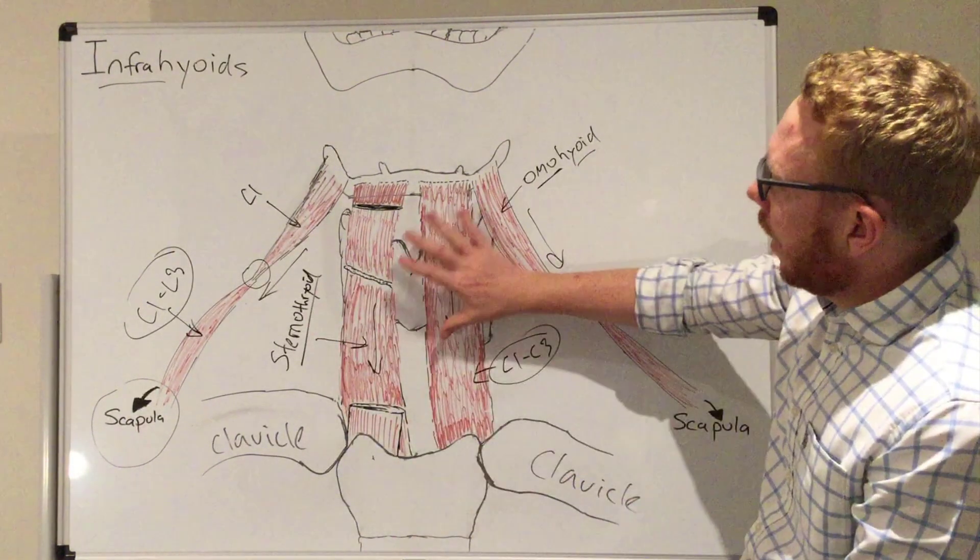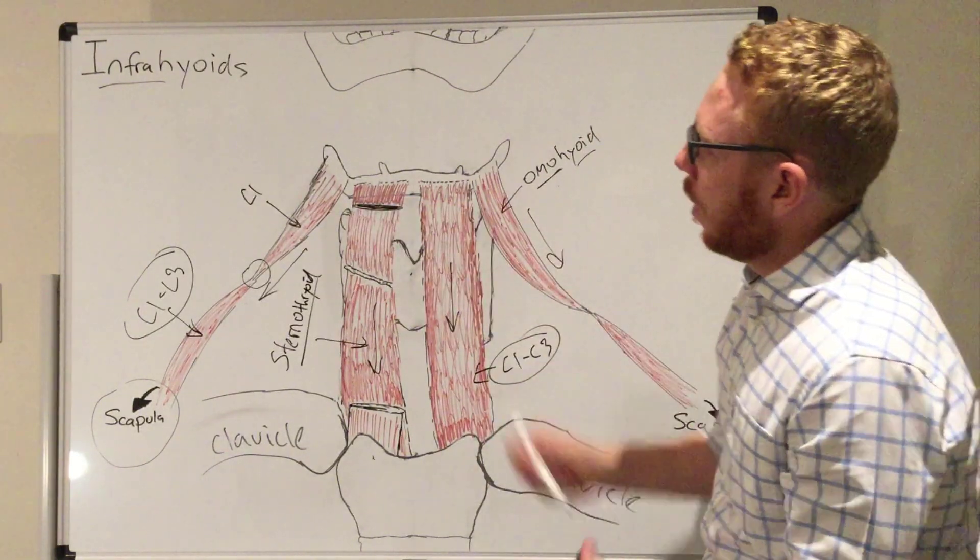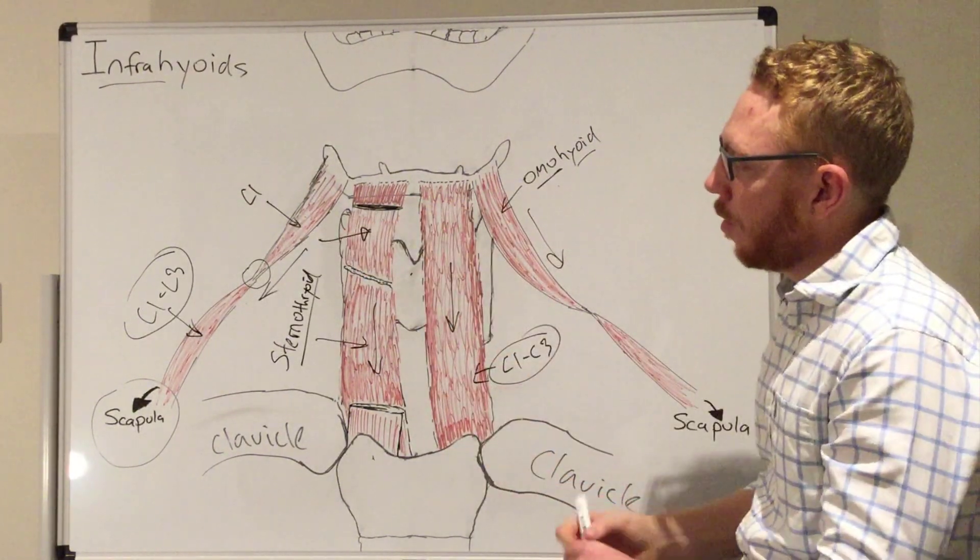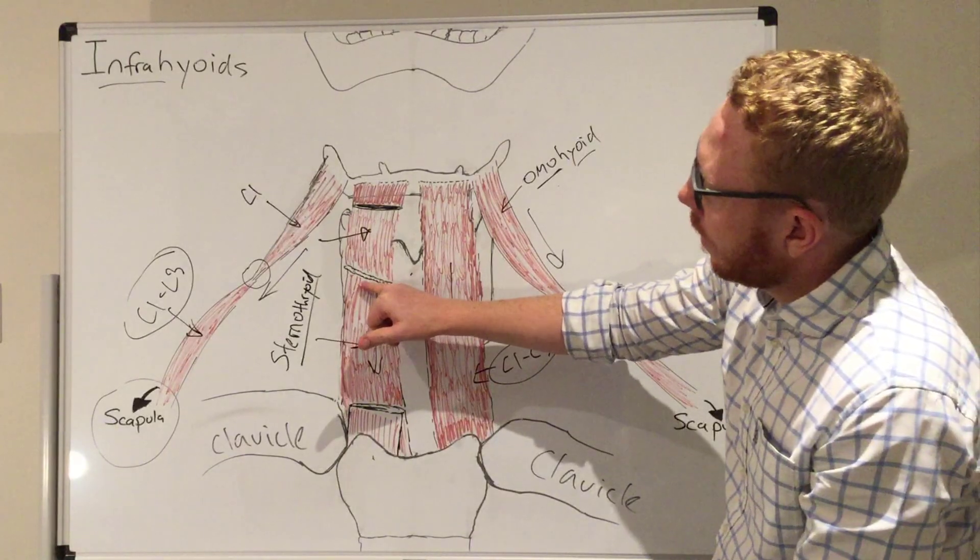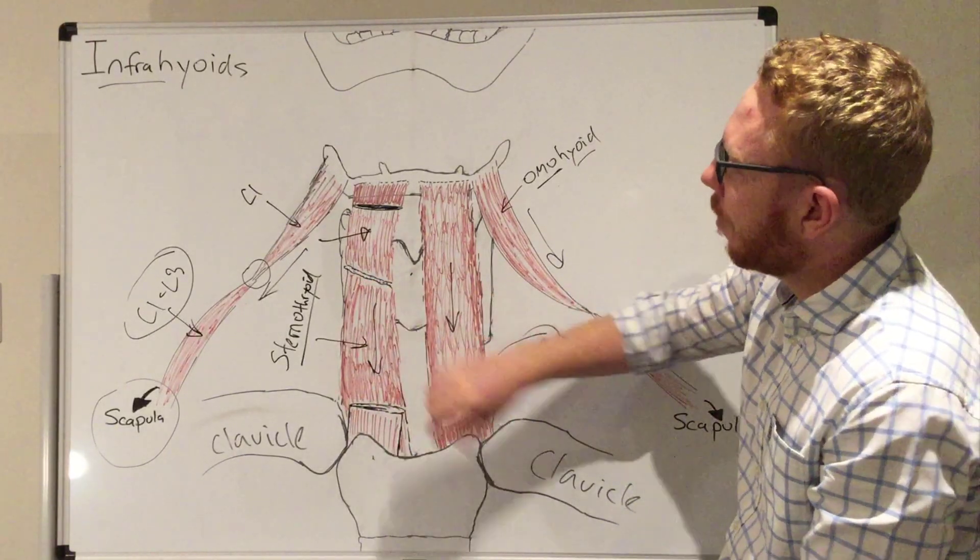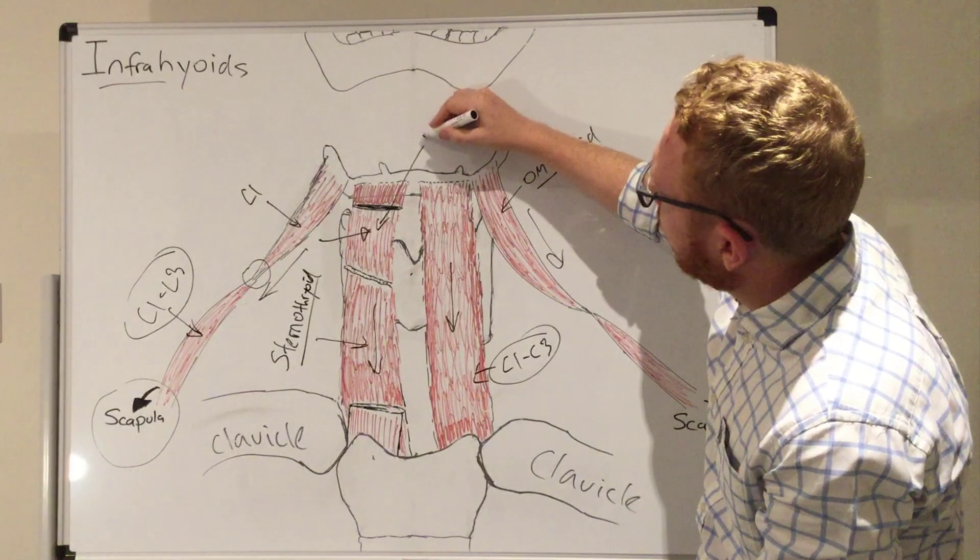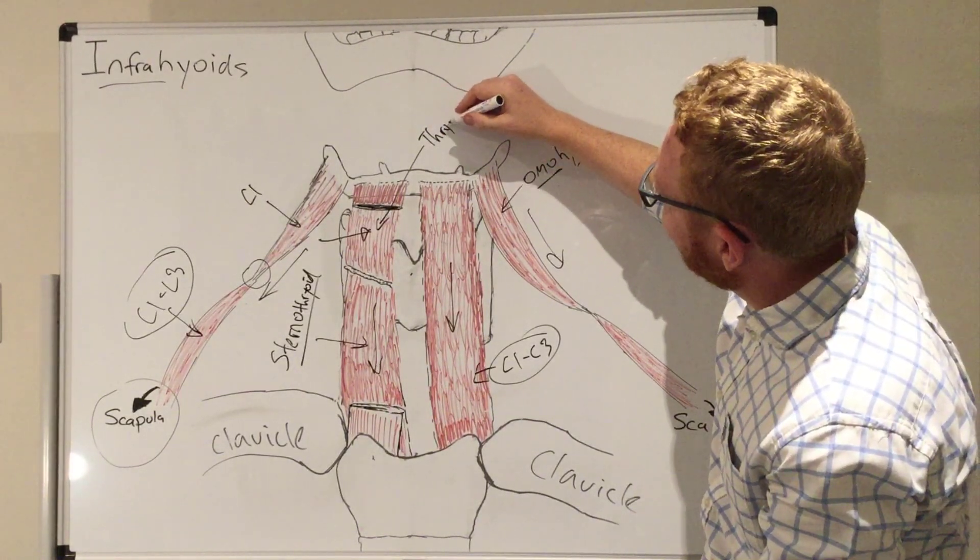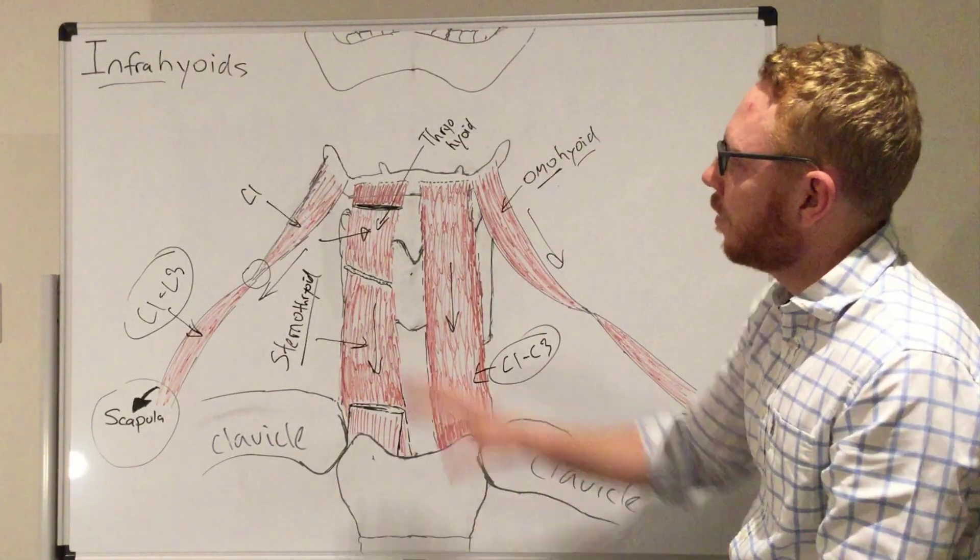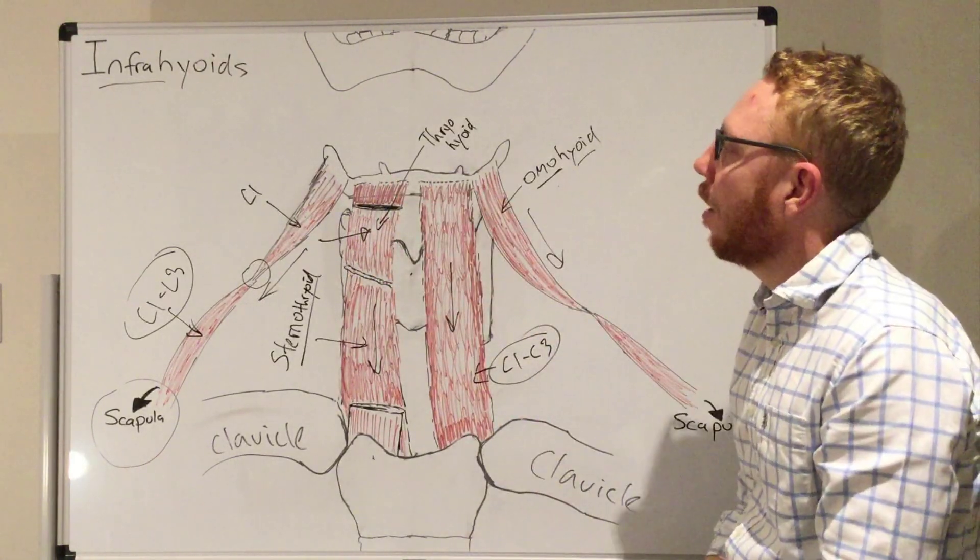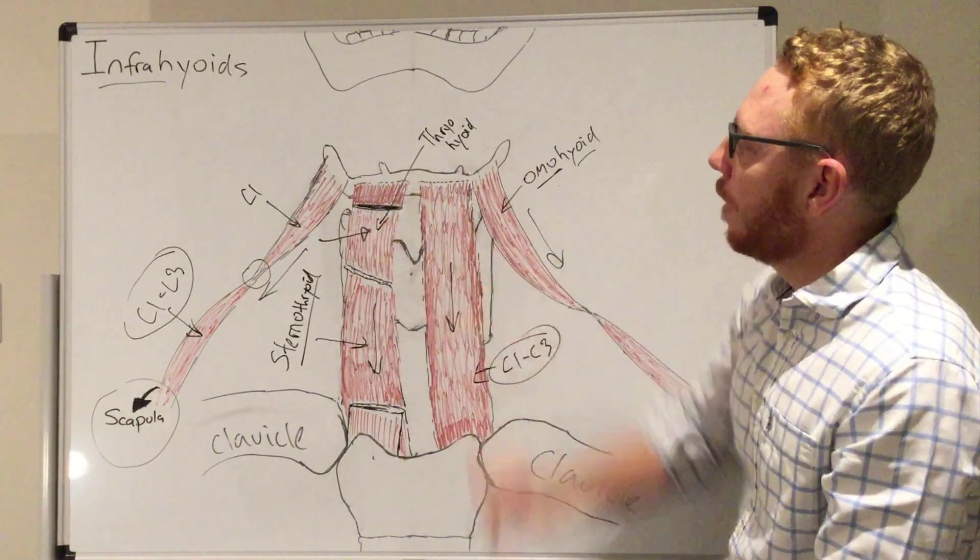Moving on to the last one. Again, we've reflected the sternohyoid back, and at the superior portion, you can see the reflection there, we've got this muscle in here. This is going to originate just superior to that oblique line, which we saw at the insertion for the sternothyroid. This one is going to go from the thyroid to the hyoid, and you can probably guess what we're going to call that: the thyrohyoid muscle. The thyrohyoid muscle is going to go from the oblique line up to the body of the hyoid behind the sternohyoid, so deeper to it, also in the belly of the hyoid.